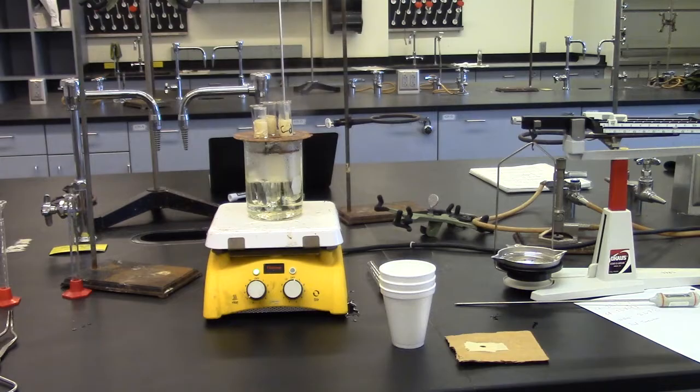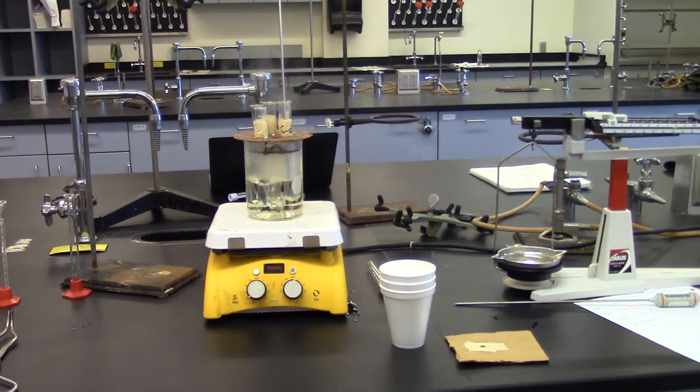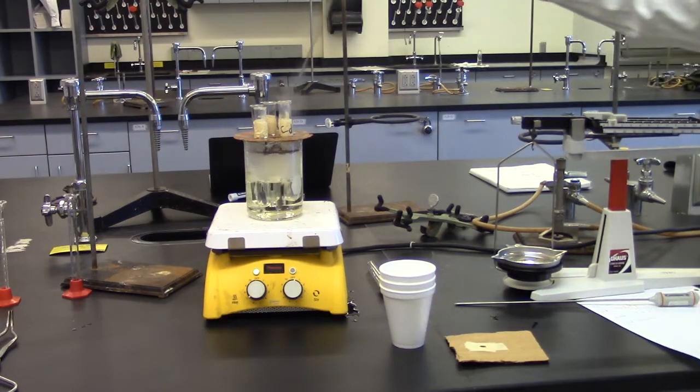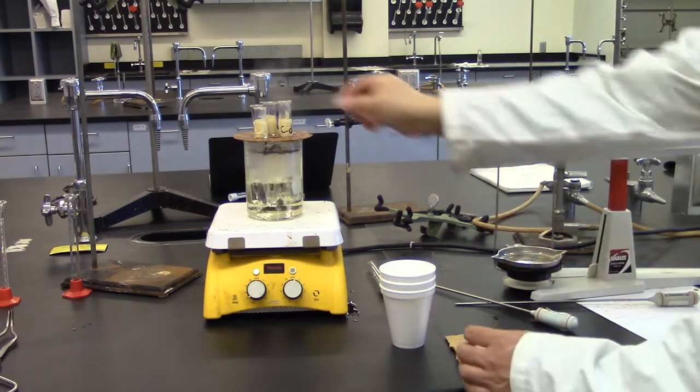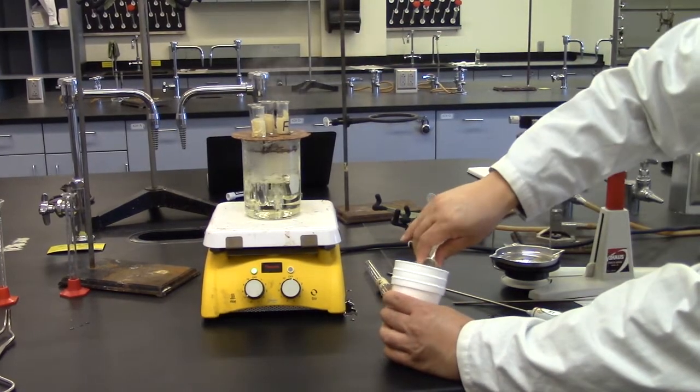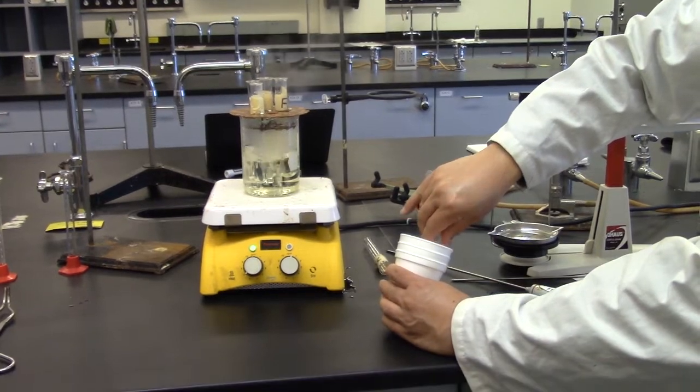Once the metal has reached 100 degrees Celsius, we will quickly transfer the cadmium metal to our calorimeter. Cover the calorimeter and measure the temperature of the water with a cold thermometer.